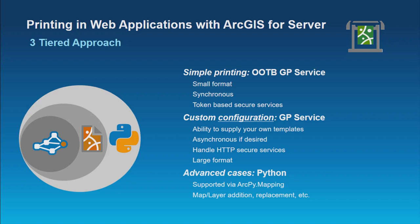The next tier up is that you can configure your own GP service. There's a GP tool installed in desktop and server — the same one the out-of-the-box print service uses — but you can extend it. You can put in your own map documents and templates into a particular folder inside of server, modifying the print service to have customized layouts and larger formats. You publish it yourself, so you can make it asynchronous and handle HTTP secure service calls. It's primarily designed for large format printing.